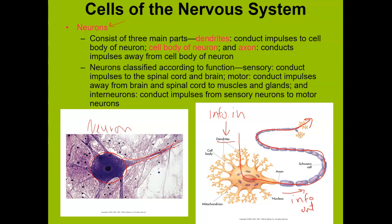Neurons are classified in terms of their function. You have sensory neurons, which conduct information to the spinal cord and then to the brain — that's info in. You have motor neurons, which take information out from the brain out to muscles and glands via the spinal cord. And then you have interneurons. These are kind of like switches on railroad tracks — they can turn on one neuron while turning the other one off. It's a part of processing.